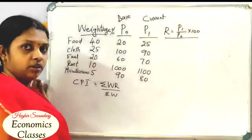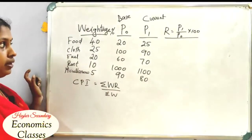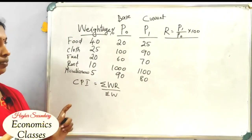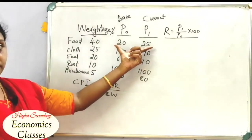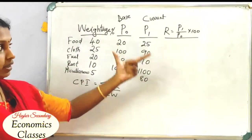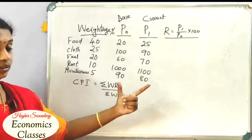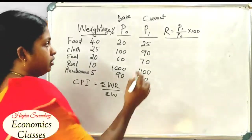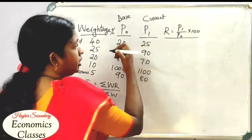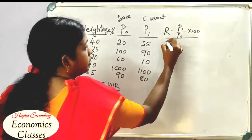R is equal to P1 divided by P0 multiplied by 100. We are going to substitute the values to calculate R for each item.